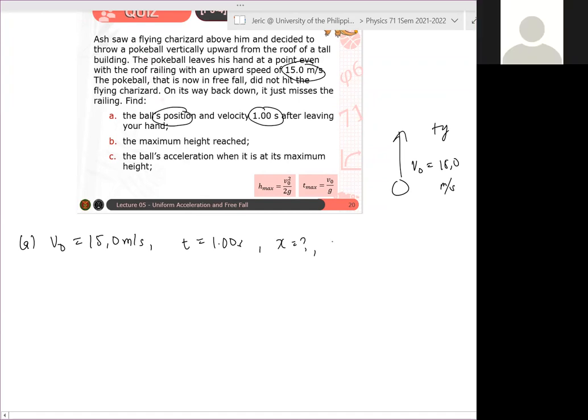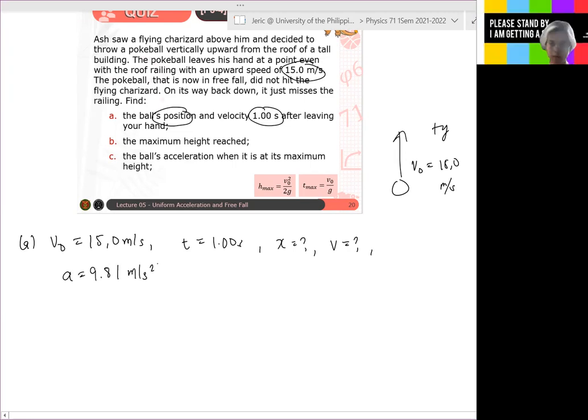Ano pa yung nawawala? Acceleration. The acceleration is what? 9.8. We will assume that it's in free fall so the acceleration should be A equals 9.80. I'm using 9.81 in this particular solution. But when you do your FQs, use 9.80. Nagawa ko na kasi 9.81. So medyo minor. Ano lang naman yung downward.